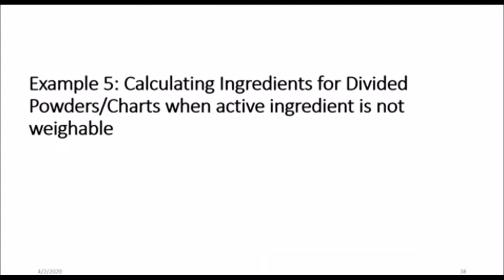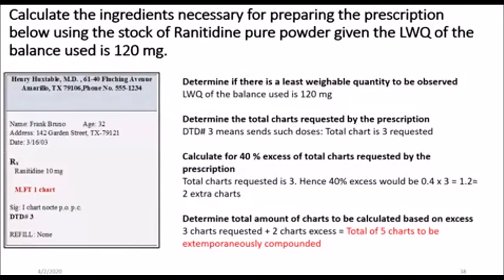We haven't used it much from the examples previously, but we will definitely be using it here. This example says: calculate the ingredients necessary for preparing the prescription below using the stock of ranitidine as pure powder, given the least weighable quantity of the balance used is 120 mg. This is the same question that we used previously, but the difference is that the stock available to you is pure powder, so the amount of ranitidine calculated would not have been directly weighable.